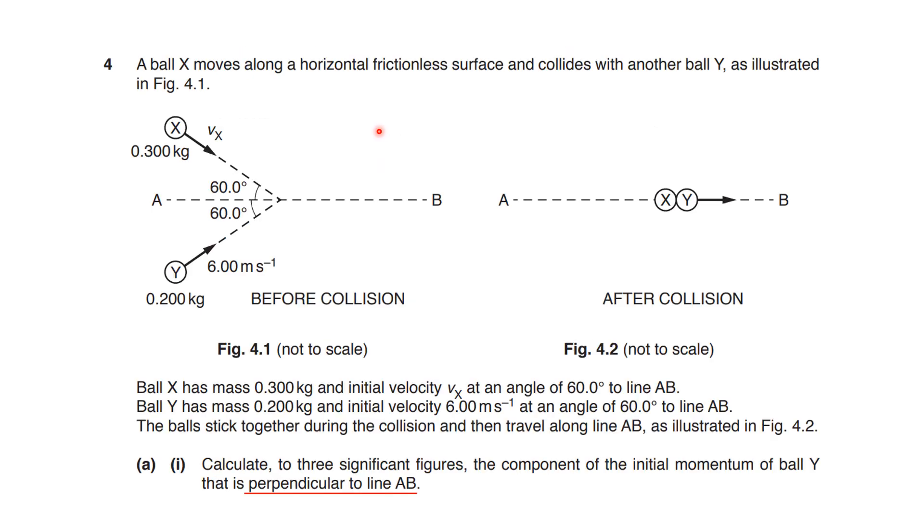Let's begin with the initial description of this question. This diagram shows before and after collision. Right there is a sign we need to use momentum. The balls are labeled X and Y. Ball X has a mass of 0.3 kg and ball Y a mass of 0.2 kg. The angles of reference with the line AB are showing here. Only the velocity of ball Y is provided. And after collision, both balls are moving together horizontally.